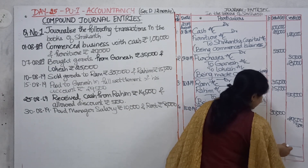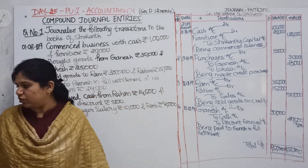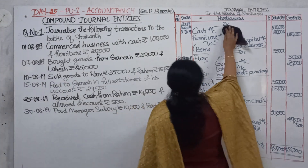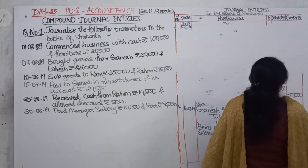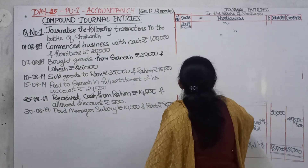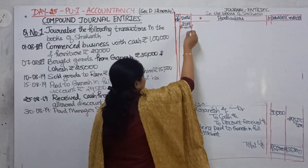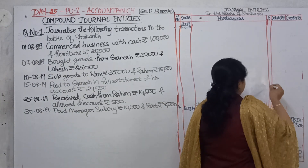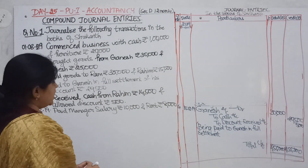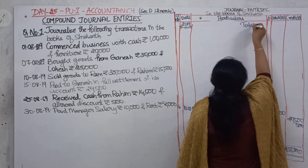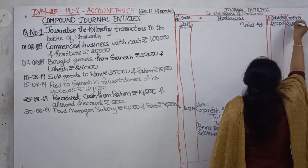This same total of rupees 2,55,000 should be brought forward for the next page. So write down 'total carried forward' and then 'total brought forward' on the next page: 2,55,000 in both columns.